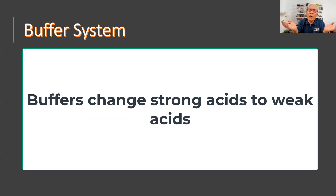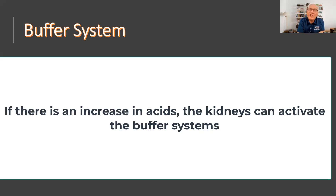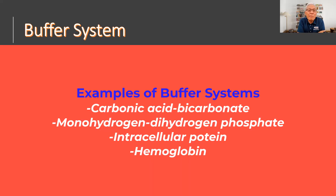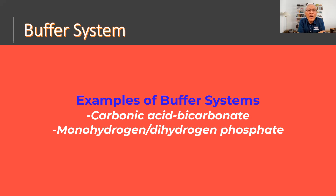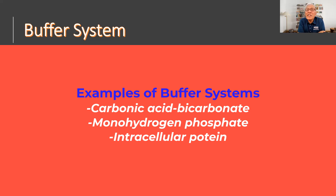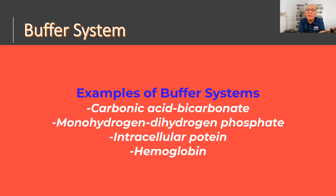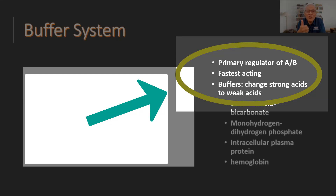Let's talk about the concept of a buffer. A buffer is something that decreases the acidity of a solution. If we have excess acids in our body, the kidney activates the buffer systems. There are several buffer systems present in the body: the carbonic acid-bicarbonate system, the monohydrogen/dihydrogen phosphate system, plasma proteins, and hemoglobin. The buffer system acts fast and changes strong acids to weak acids.